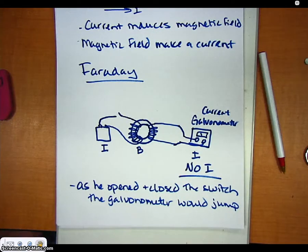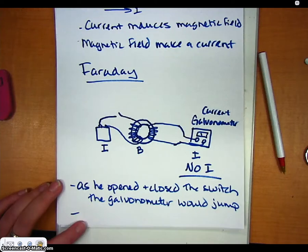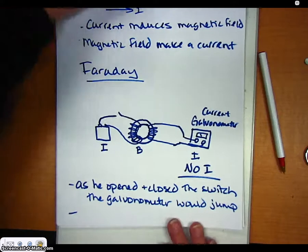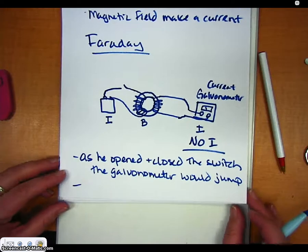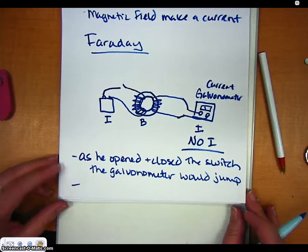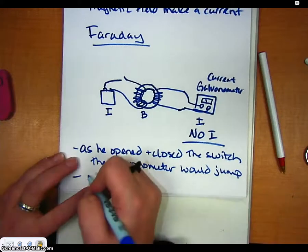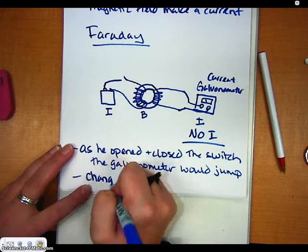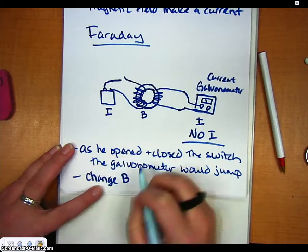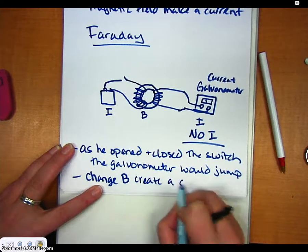So what his conclusion was, or his new hypothesis was that maybe what happens is that a current is induced when a magnetic field is changing. So his new hypothesis was: does a changing magnetic field create a current?